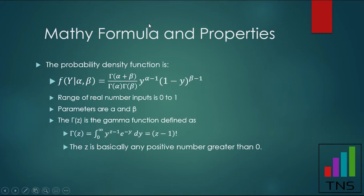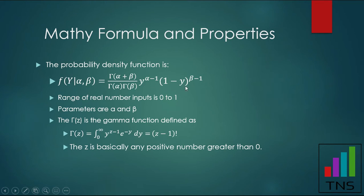Now for the math formula part, which we have to cover if we're going to do data science or machine learning. Since we're focused on the applied aspect, we're going to give you the statistical distribution formula right off the bat. The range of real value inputs — that's the y variable you see here — takes values between zero and one.